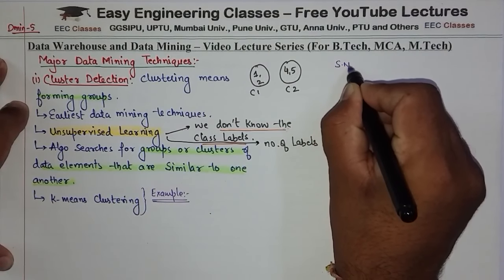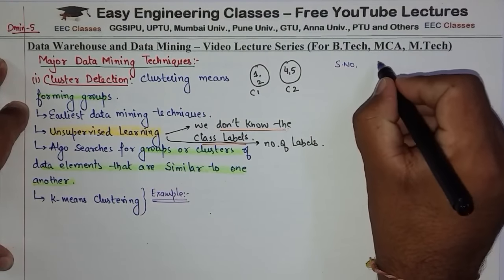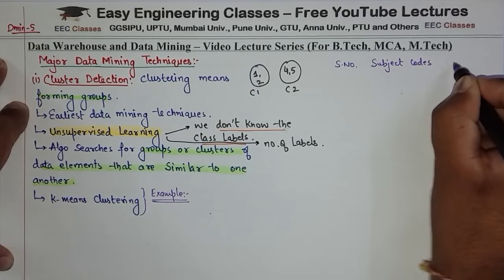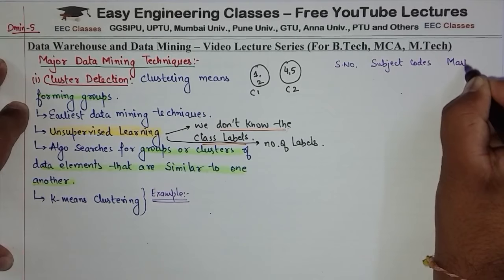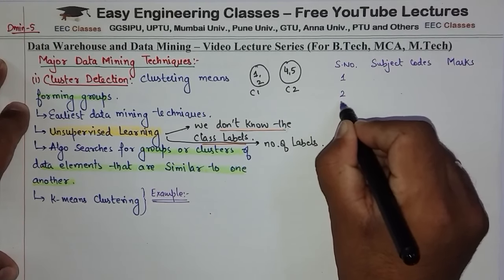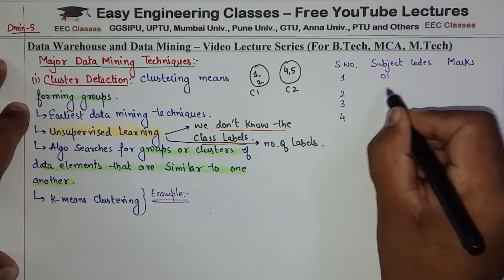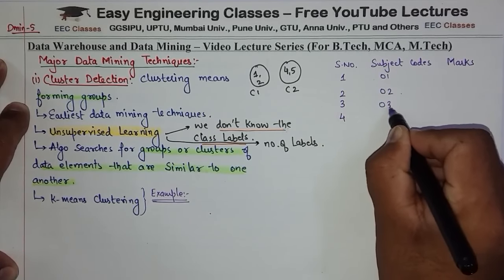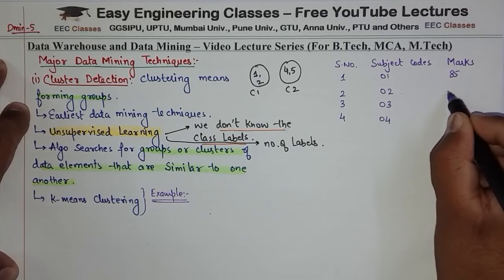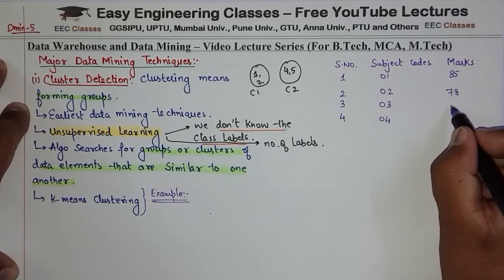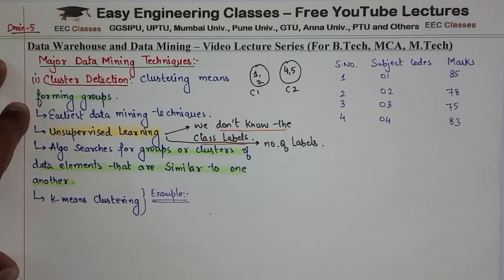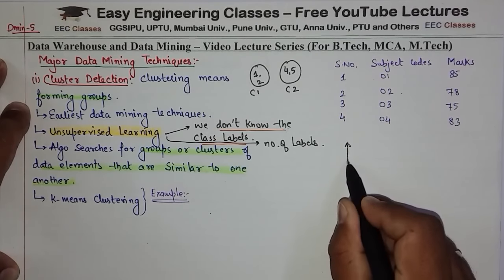Let us say that we have some data. I have 4 students' data. I have 4 students and their subject marks. Let us say student codes 01, 02, 03, 04, and the subject marks are 85, 78, 75, and 83. Clustering basically means grouping similar data items into one cluster.